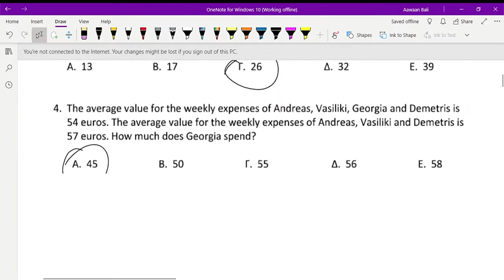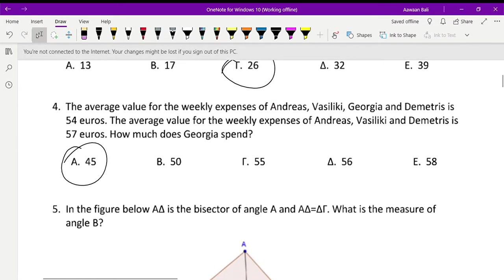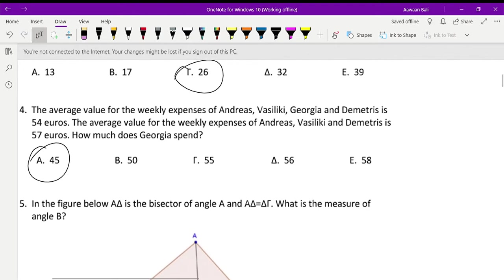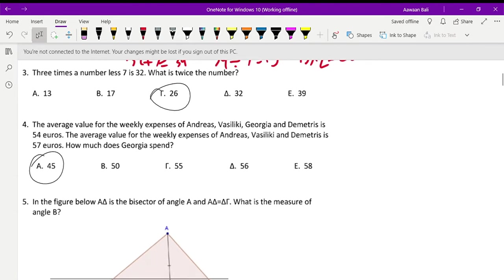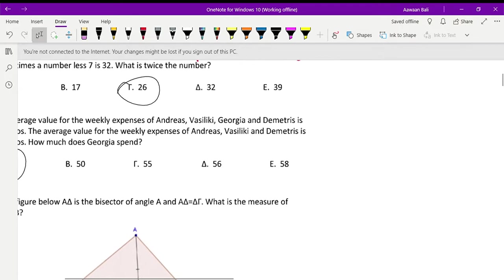Question 4. The average value for the weekly expenses of Andreas, Vasiliki, Georgia, and Dimitris is 54 euros. The average value for the weekly expenses of Andreas, Vasiliki, and Dimitris is 57 euros. How much does Georgia spend? To find this, first we have to find the average between both. For the first part, we have 4 people and 54 euros, so 54 times 4 is 216.